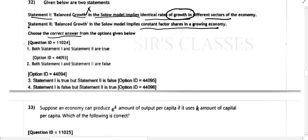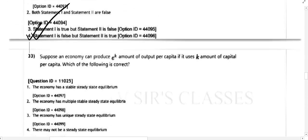So balanced growth does not mean identical growth rates. What balanced growth implies is constant factor shares in the growing economy. The guaranteed part is the factor shares, not the rate of growth. Therefore, statement one is false. Statement two is correct, so the answer follows accordingly.